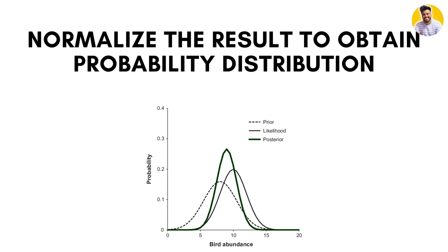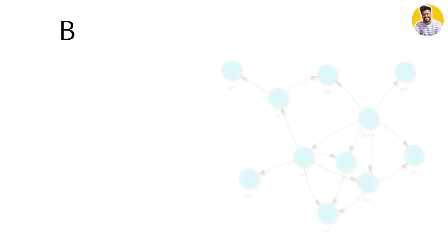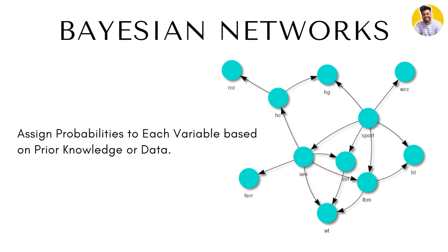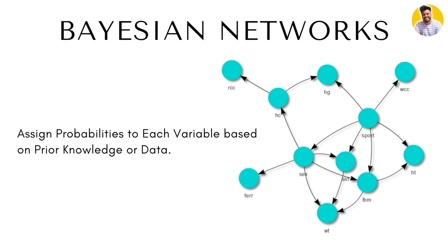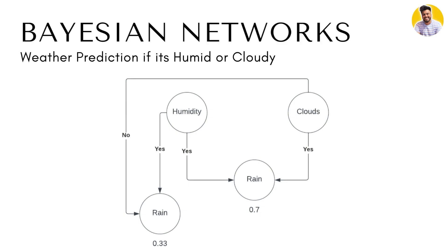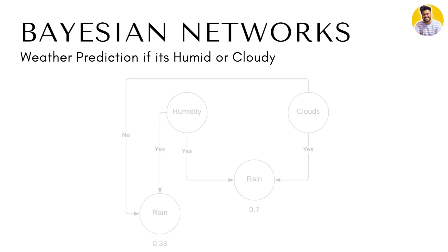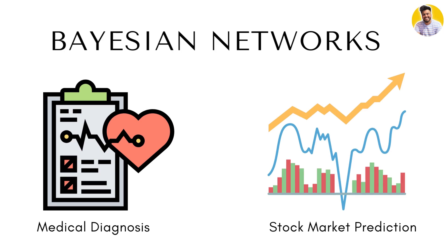The posterior distribution becomes the prior distribution for the next round of Bayesian inference as we continue to update our beliefs with new information. Once we have the structure of our Bayesian network, we assign probabilities to each variable based on prior knowledge or data, and use Bayes' theorem to update those probabilities. For example, consider a Bayesian network representing the probability of rain based on two variables: cloudiness and humidity. We assign probabilities from historical data and get 70% probability of rain if it's cloudy and humid. But if we observe it's not humid, we update using Bayes' theorem and find the new probability of rain is 33%.